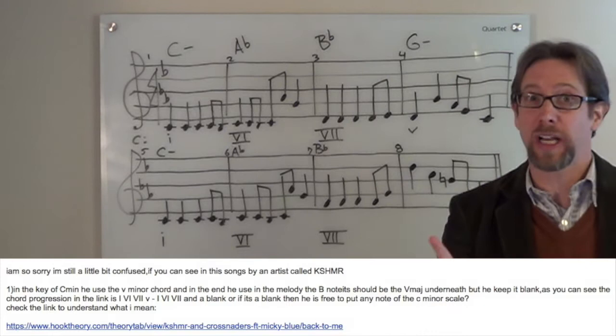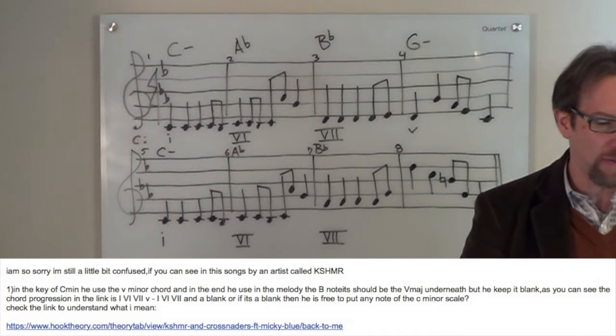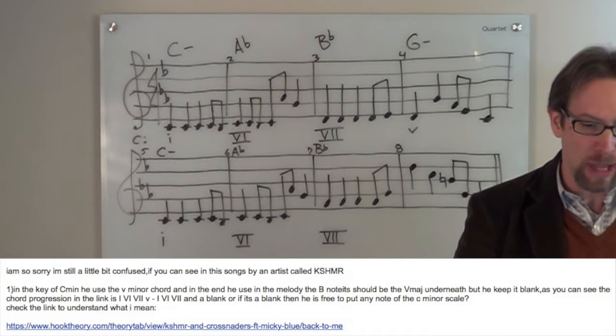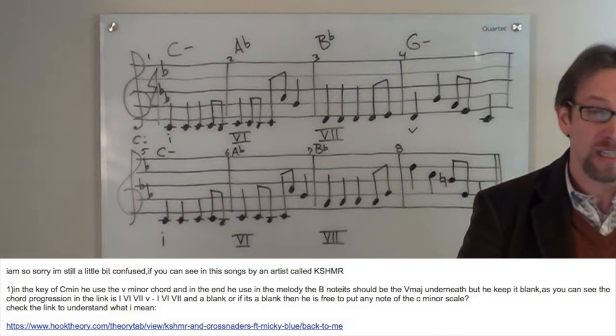In the key of C minor, he uses the minor 5 chord, and in the end, he uses, in the melody, the B note. It should be the 5 major underneath, a major 5 chord underneath, but he keeps it blank. As you can see, the chord progression in the link is 1, 6, subtonic 7,